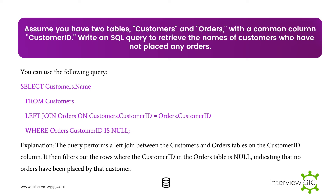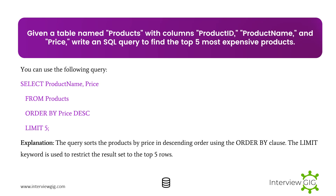Next Scenario: Assume you have two tables, Customers and Orders, with a common column Customer ID. Write an SQL query to retrieve the names of customers who have not placed any orders. The query performs a LEFT JOIN between the Customers and Orders tables on the Customer ID column, then filters out rows where the Customer ID in the Orders table is null, indicating no orders have been placed by that customer.